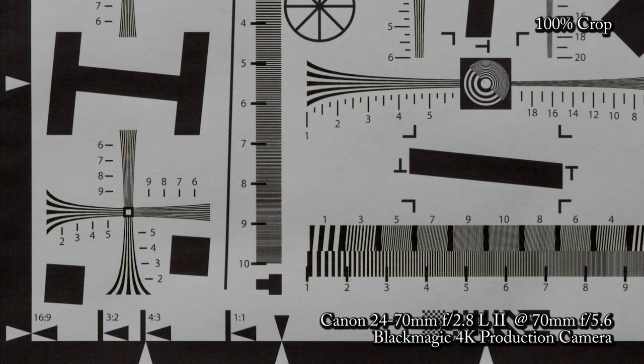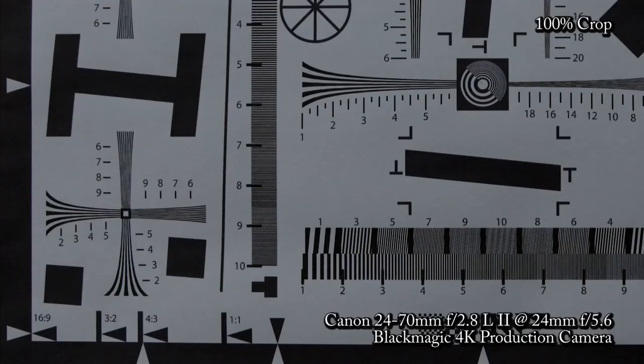70mm on the 24-70 however is clearer and 24mm is even clearer again.